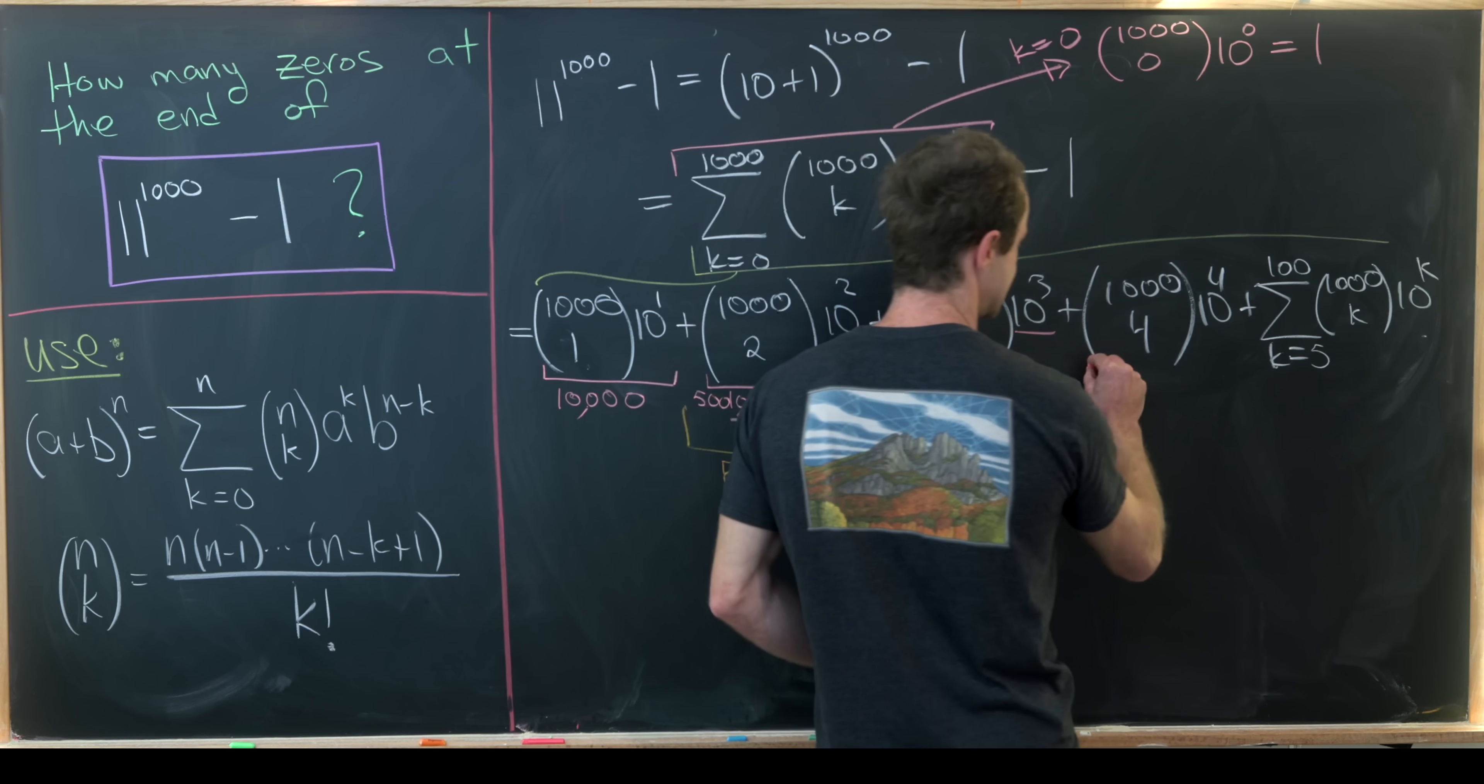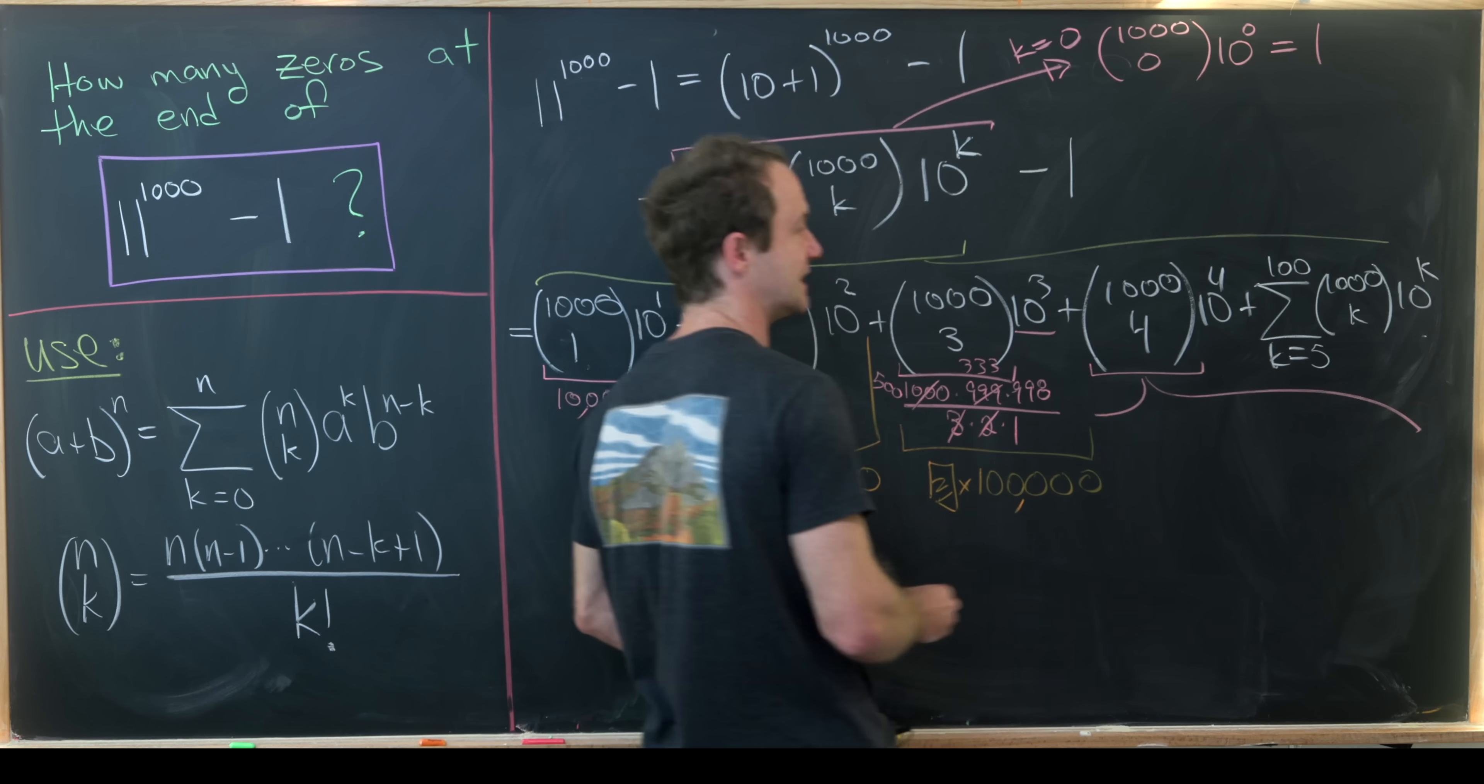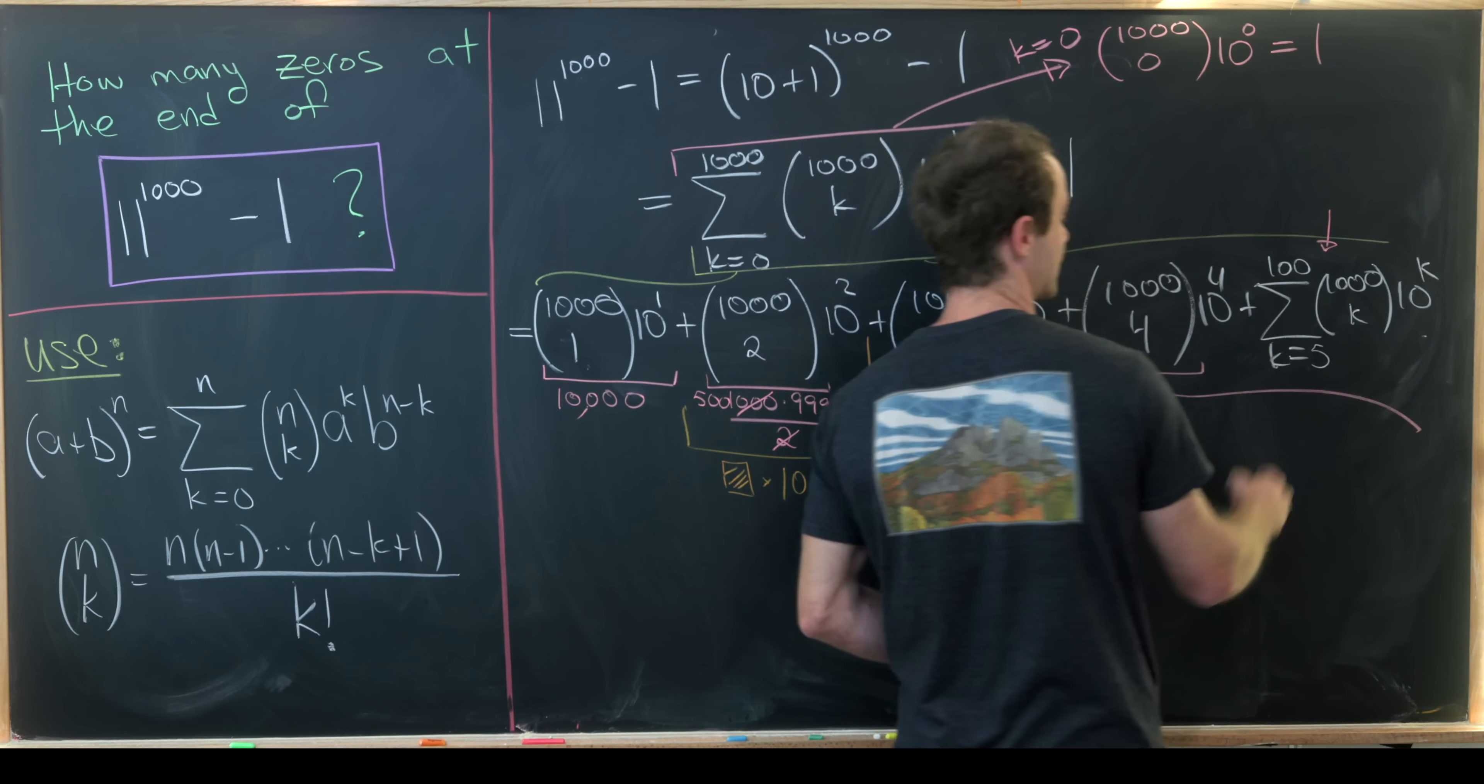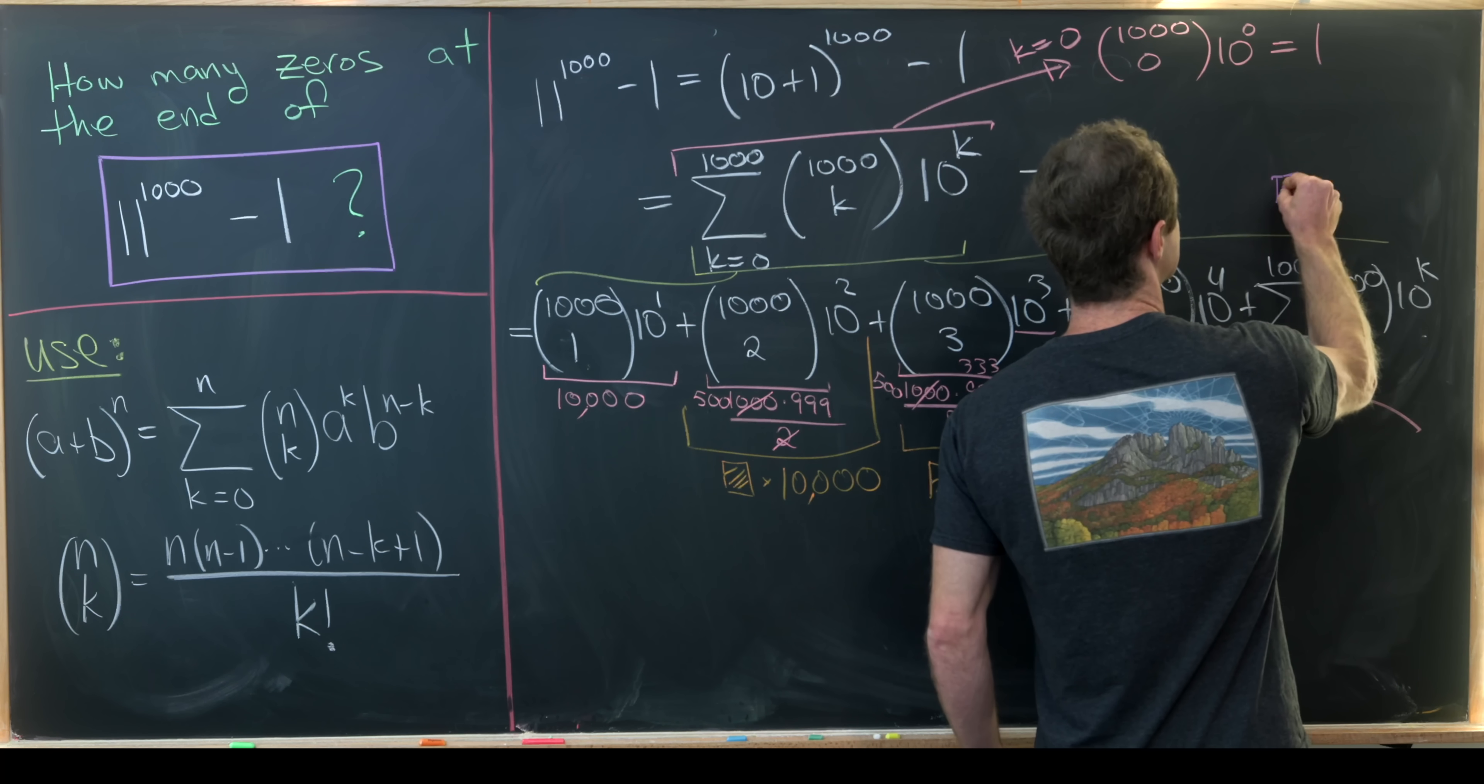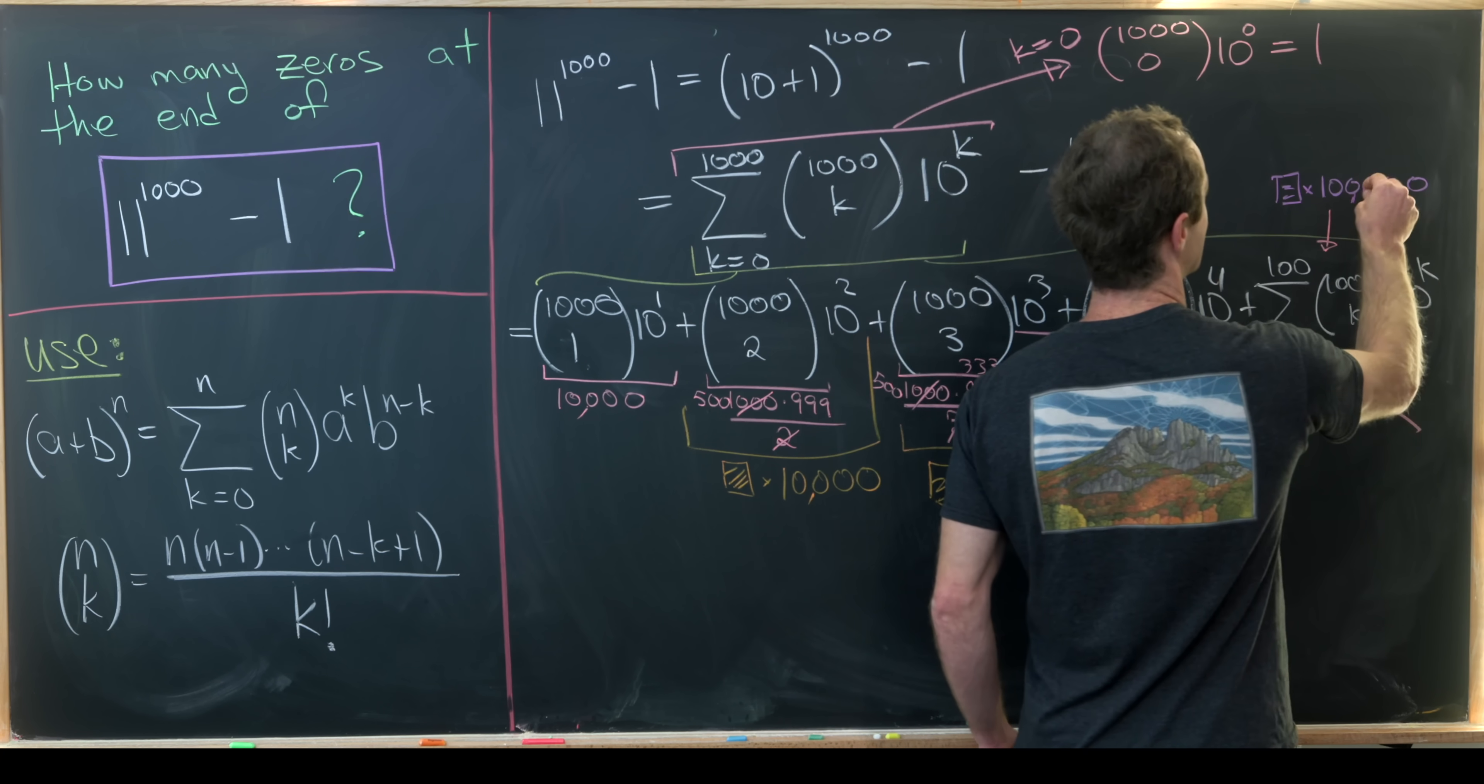Now let's look at what's going on for this 10 to the 4. That's actually the last one we need to work with because notice that since k is bigger than or equal to five for every term in this sum, we see that every term in this sum is something times a number ending in five zeros.